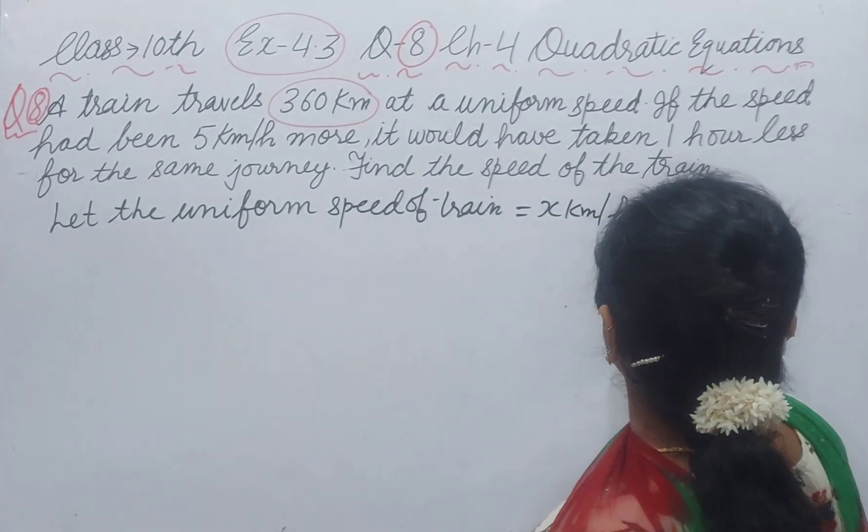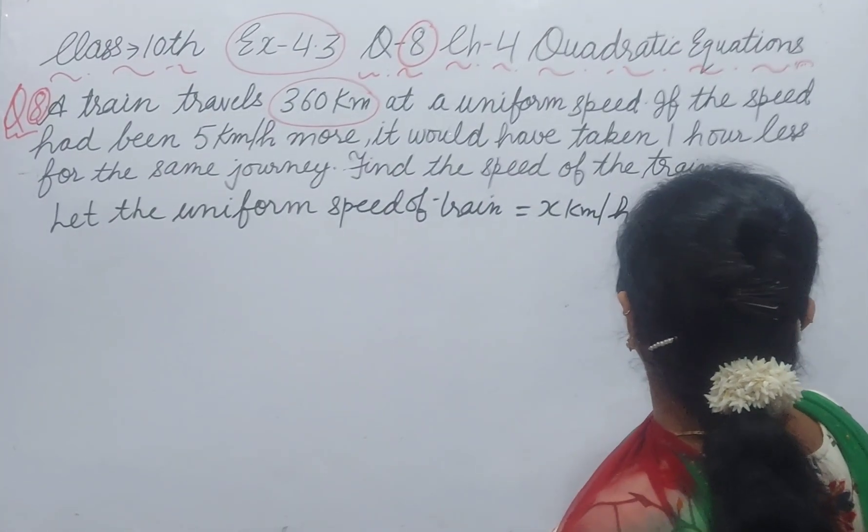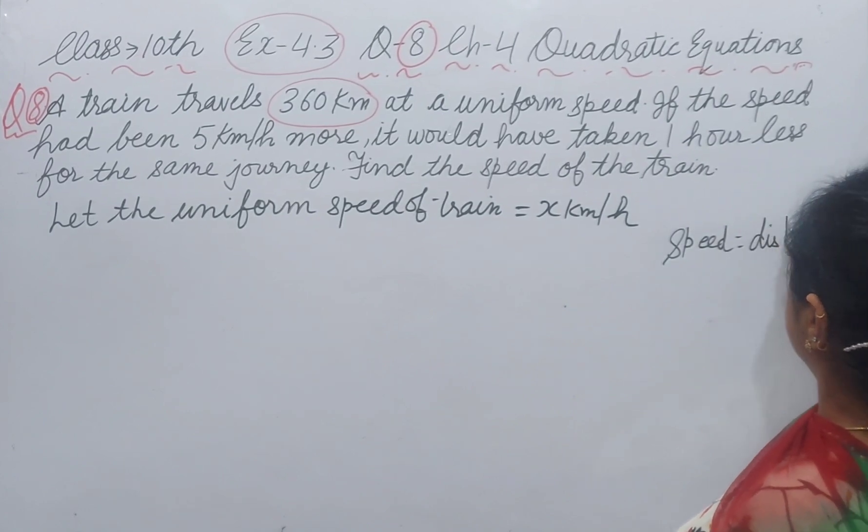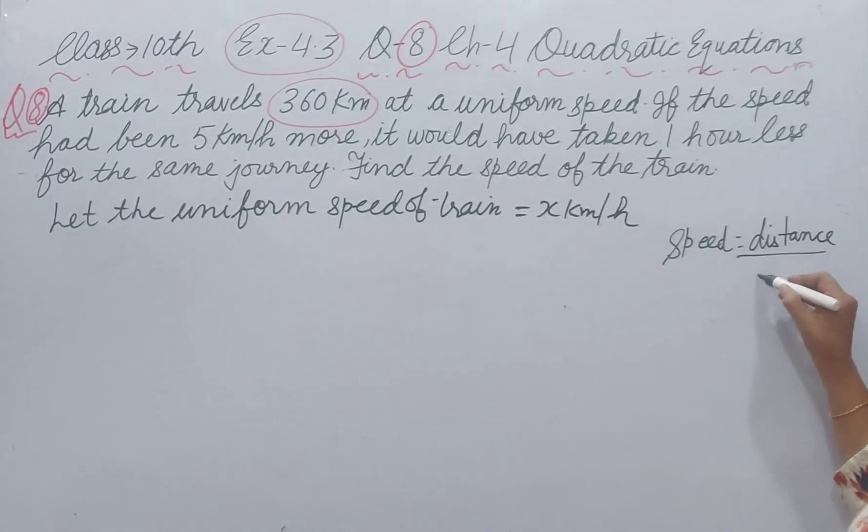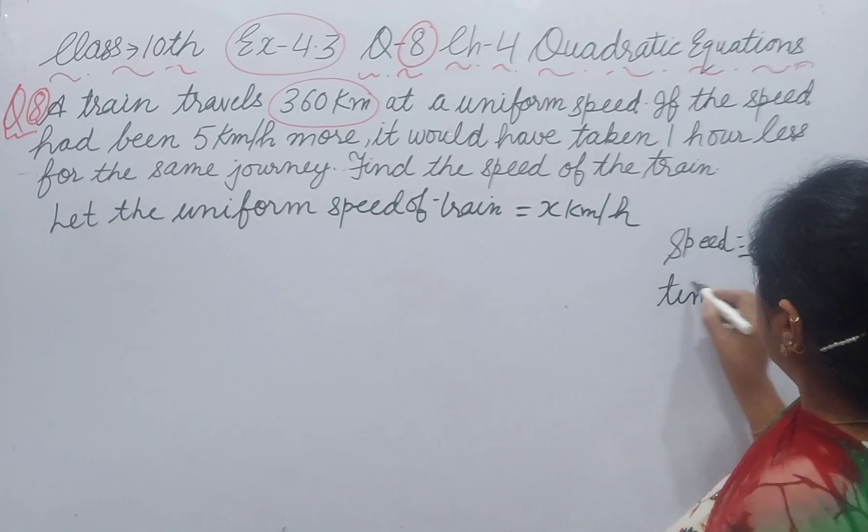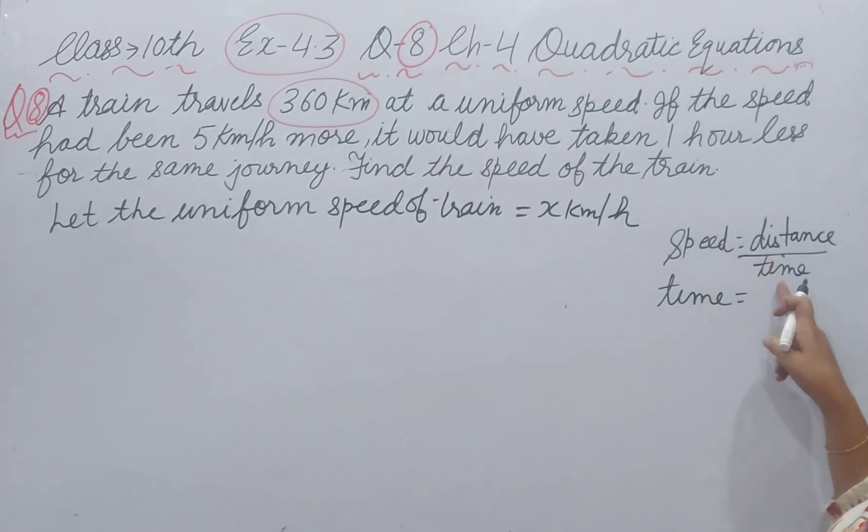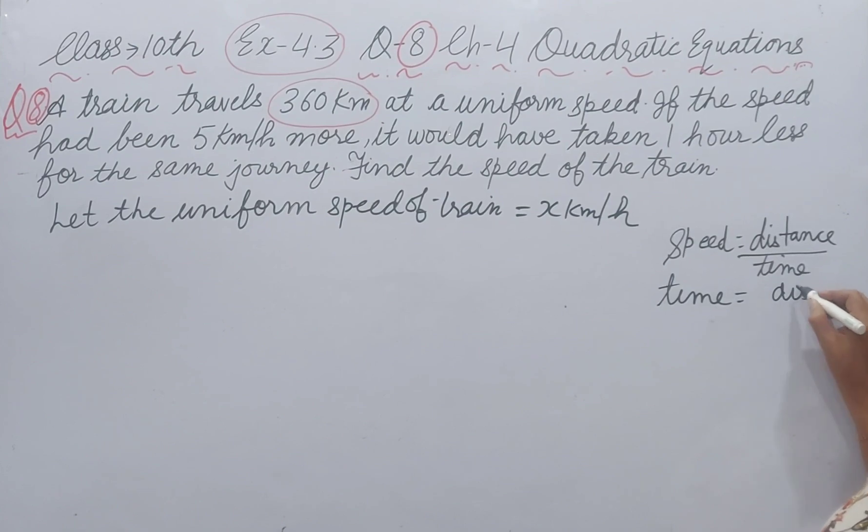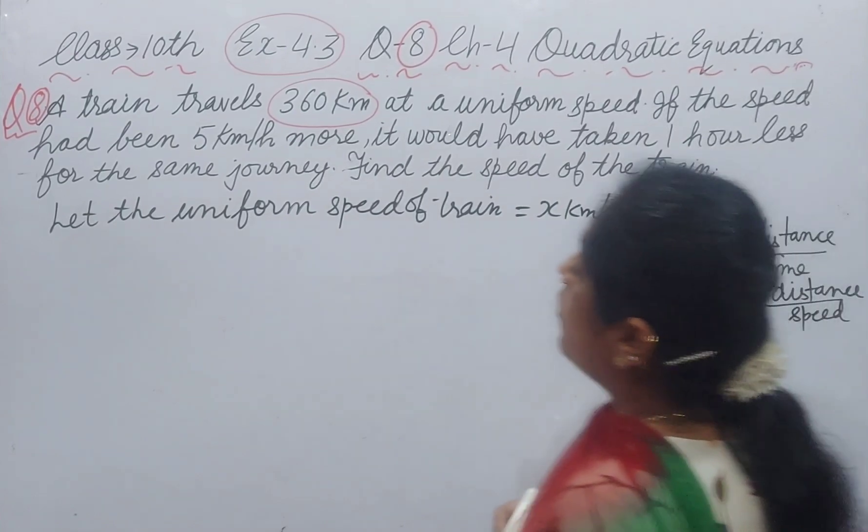Speed is distance upon time. If we want to know the time, then speed will come here as a denominator. Means time formula will be distance upon speed.